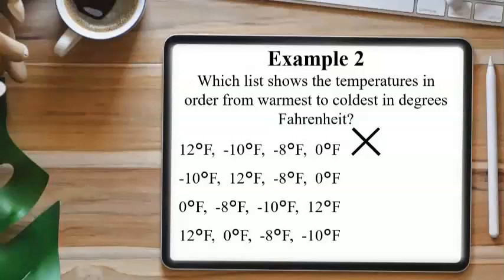The next answer choice is starting with the coldest temperature, so we can eliminate this answer choice as well, being that we want to start with the warmest temperature. The third answer choice starts with 0, but 0 isn't the coldest, the negative temperatures would be even colder, so we can eliminate this answer choice too. The last answer choice starts with the warmest temperature, 12, and then lists 0, and then the negative temperatures, negative 8, then negative 10, the coldest. So this last answer choice is correct.